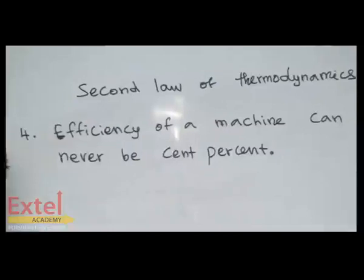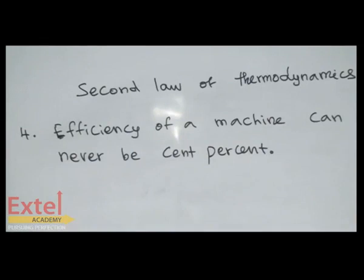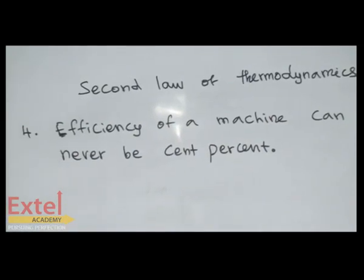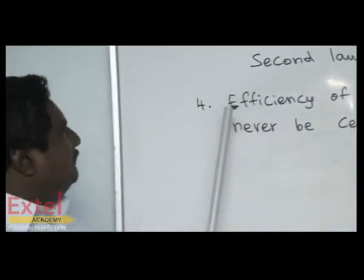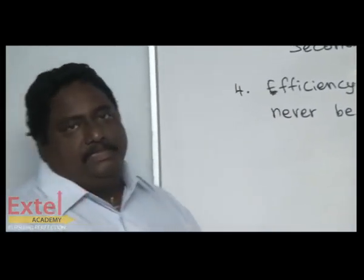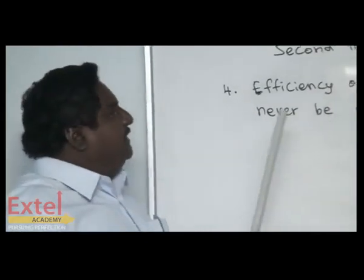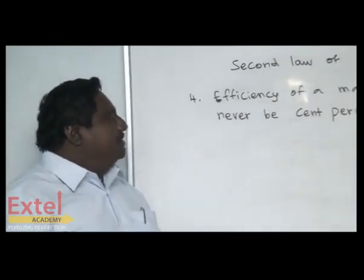So far, we have seen the Kelvin-Planck statement, Clausius statement, and Entropy statement. It's the fourth one, telling about the efficiency of a machine.